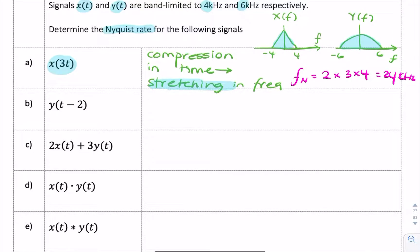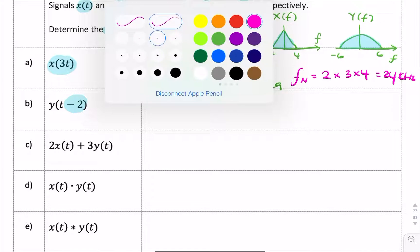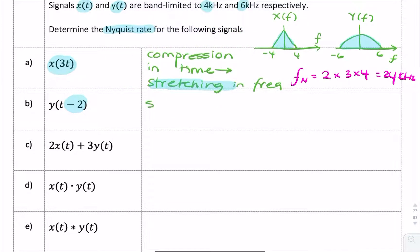Now for B, we have the Y signal shifted in time by 2 seconds. So it's a shift in time. A shift in time doesn't change the spectrum, and that just corresponds to an e to the minus j omega 2 multiplied by Y of omega.